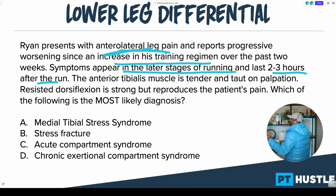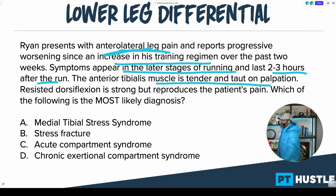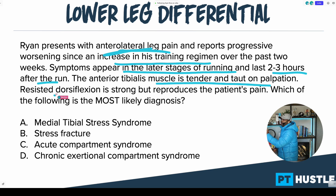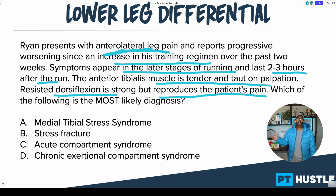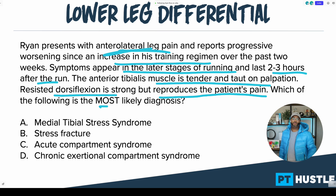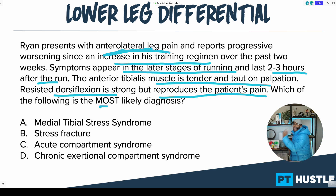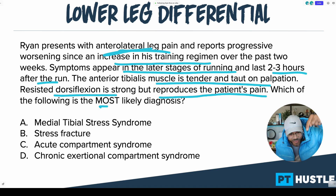Let's continue down. The anterior tib muscle is tender and taut on palpation — also very important. Resisted dorsiflexion is strong but reproduces the patient's pain. Which of the following is the most likely diagnosis? This is an evaluation-based question, so those of you listening right now, lock in your answer below and let's move through it.